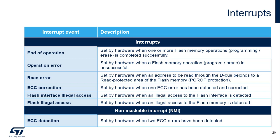Four interrupts can be generated by the flash memory. The end-of-operation interrupt is triggered when one or more flash program or erase operations complete successfully. The operation error interrupt is triggered when a flash memory program or erase operation fails. The read error interrupt is triggered when an address read through the core data bus belongs to an area protected by the PC-ROP option. The ECC interrupt is triggered when one ECC error is detected and corrected. When two ECC errors are detected, a non-maskable interrupt is generated. Illegal accesses to the flash interface or the flash memory generate an illegal event to the TrustZone interrupt controller.